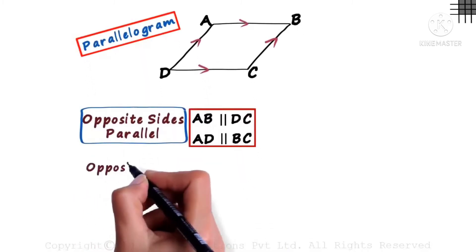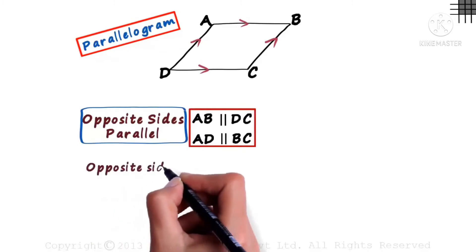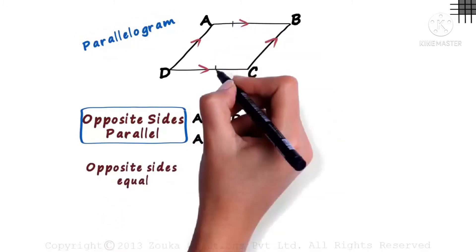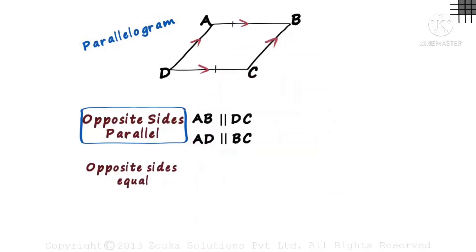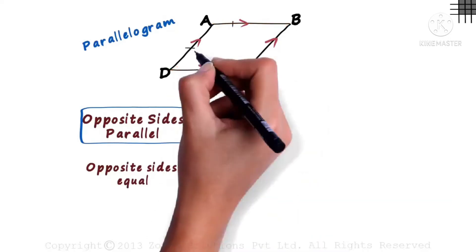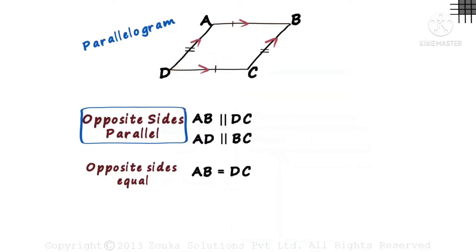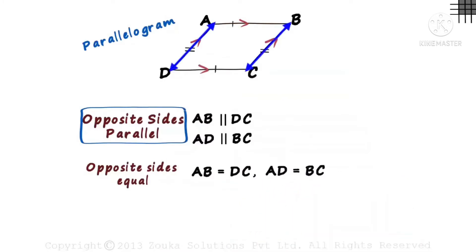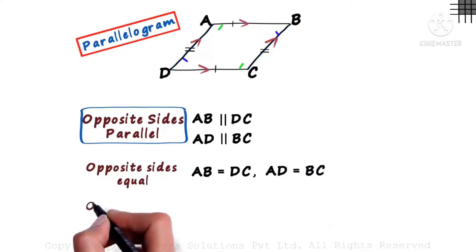Next, in a parallelogram, opposite sides are equal also. So, AB is equal to DC, and AD is equal to BC. So, in a parallelogram, opposite sides are equal.